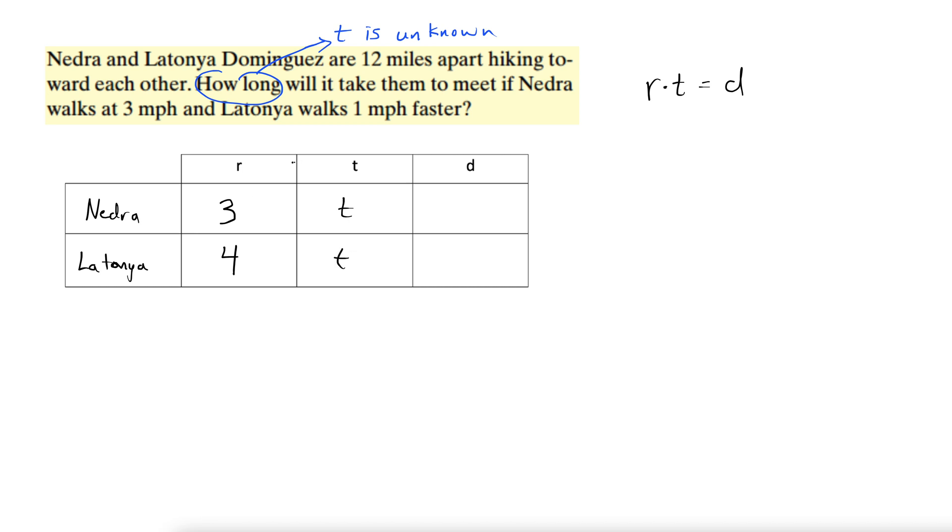And the distance. This is rate times time equals distance. So three times T, three T. Four times T, four T.